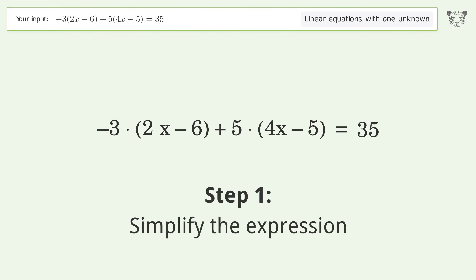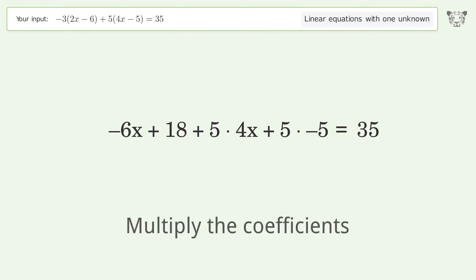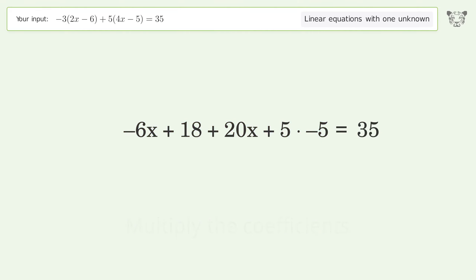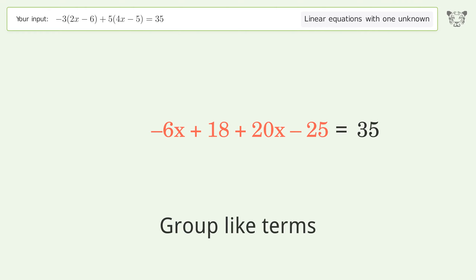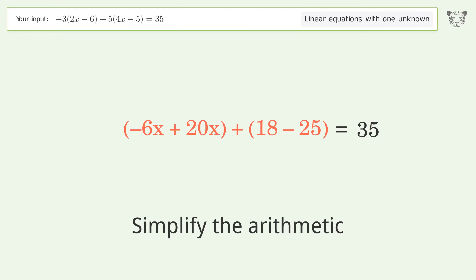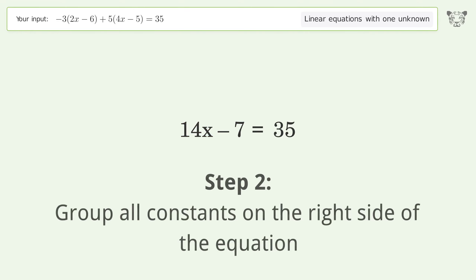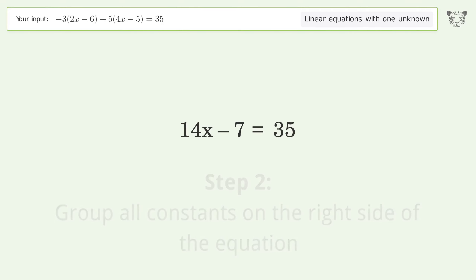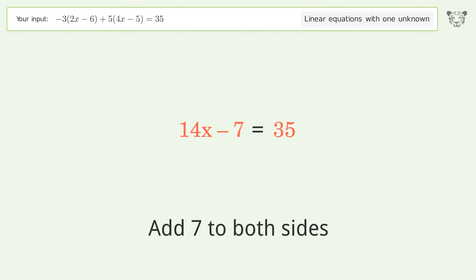Let's solve it step by step. Simplify the expression: expand the parentheses, multiply the coefficients, simplify the arithmetic. Then group like terms and simplify the arithmetic.